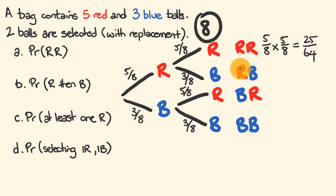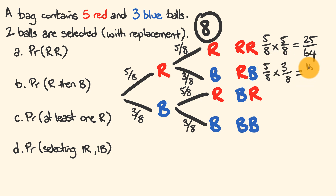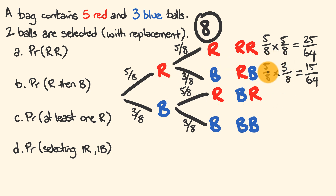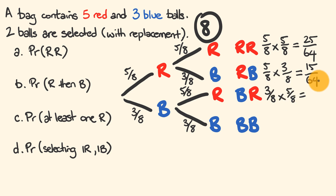For red then blue: we have a 5/8 chance first, multiplied by 3/8, giving 15/64. For blue then red: it's the same probability worked out by multiplying 3/8 by 5/8 — three times five is 15, eight times eight is 64 — also 15/64.